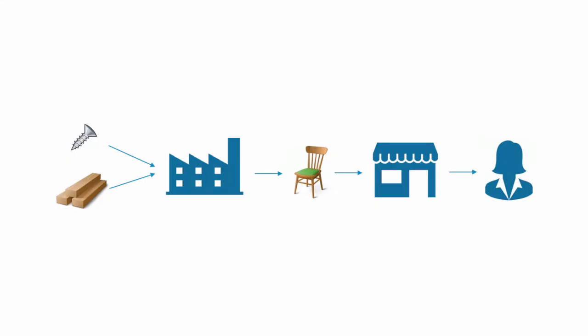Most of us know what a retail pipeline is. Anytime we buy anything from a store or from the internet, we know there's a bunch of things that have to happen before the item gets to us — things like acquiring the raw materials, getting those to the manufacturer, packaging, delivery to the store, purchase, and then eventually delivery to us.